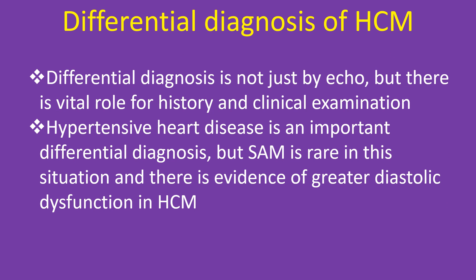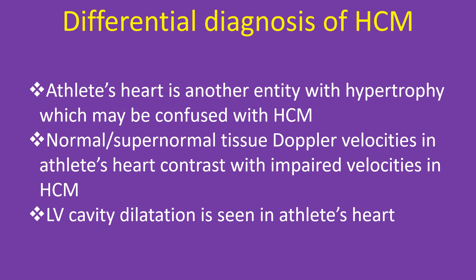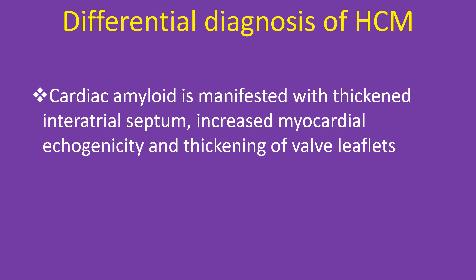Differential diagnosis of HCM is not just by echo — history and clinical examination play a vital role. Hypertensive heart disease is an important differential, but SAM is rare and diastolic dysfunction is greater in HCM. Athlete's heart is another entity with hypertrophy that may be confused with HCM; normal or supernormal tissue Doppler velocities in athlete's heart contrast with impaired velocities in HCM, and LV cavity dilatation is seen in athlete's heart. Cardiac amyloid presents with thickened inter-atrial septum, increased myocardial echogenicity, and thickening of valve leaflets.